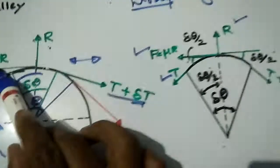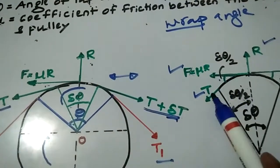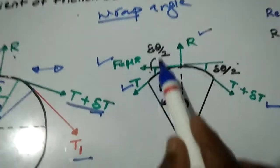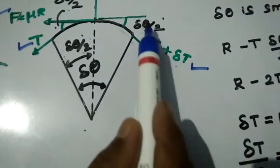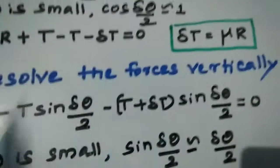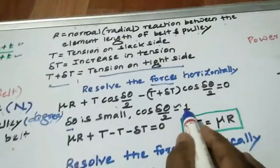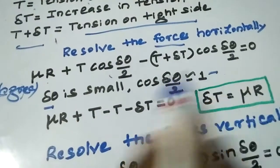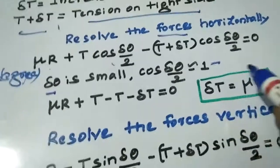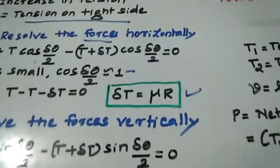Taking friction as positive, T cos(delta theta/2) and (T + delta T) cos(delta theta/2) both act horizontally. Since delta theta is small, cos(delta theta/2) approaches 1. Substituting into the equation, mu R equals delta T. So from the horizontal equation: delta T = mu R.